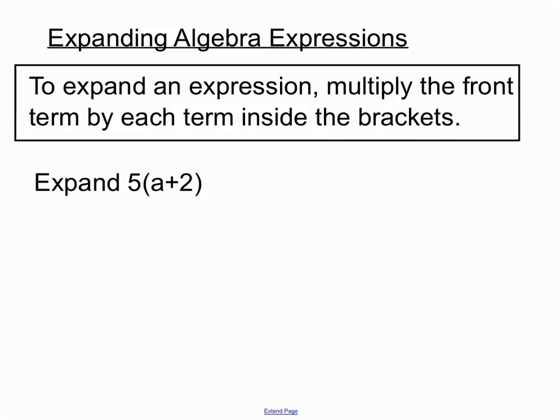We'll see how that pans out. So step one, we want to multiply 5 by a and we then want to multiply 5 by 2 to make sure none of the terms inside the bracket feels lonely. So we'll just simplify that on the next line there. 5 times a is 5a, 5 times 2 is 10 and we're done.